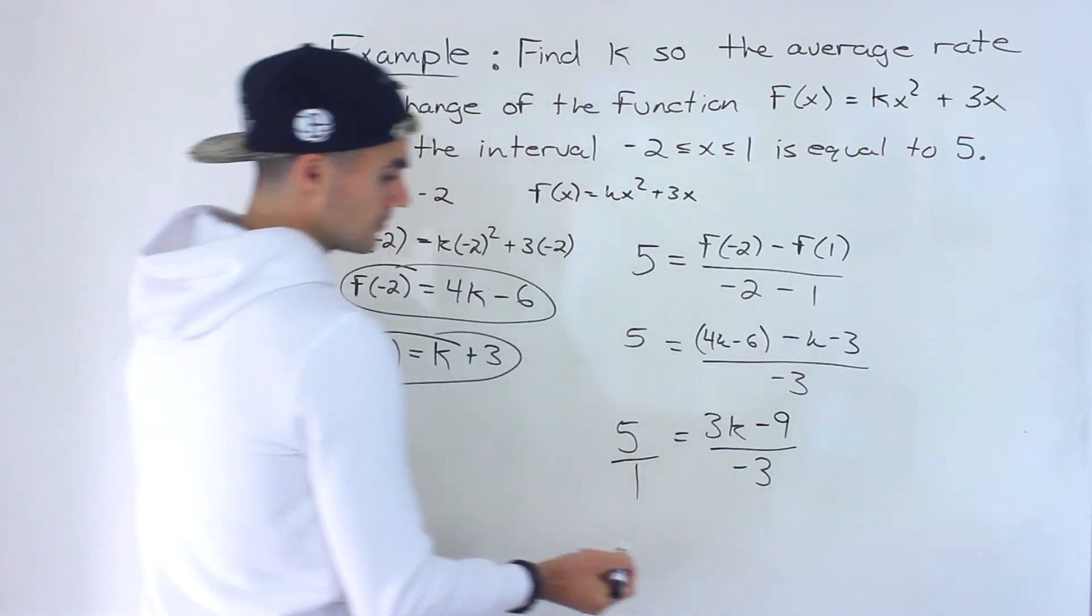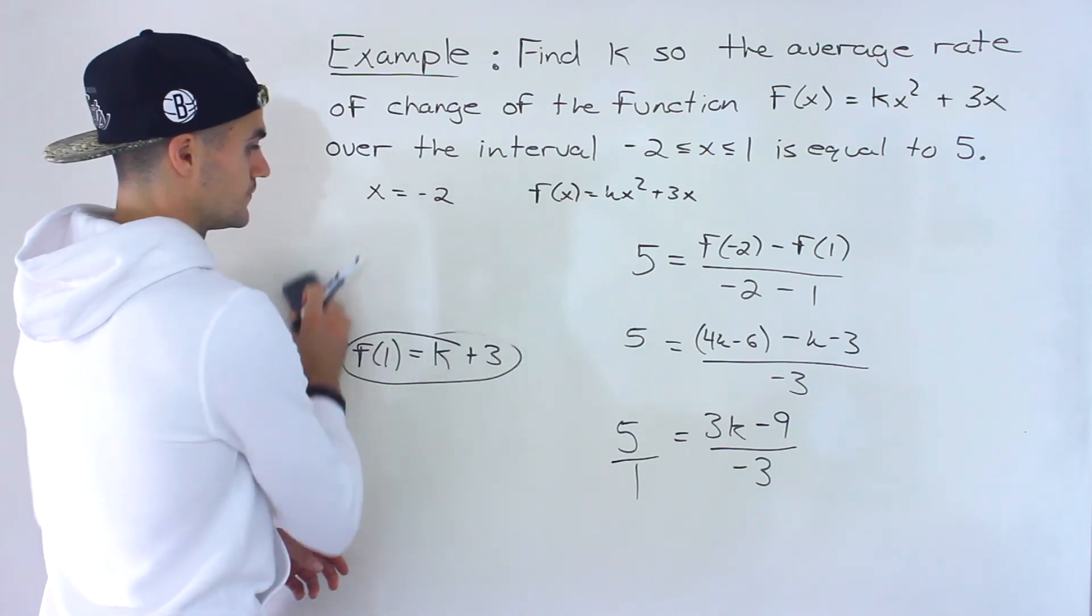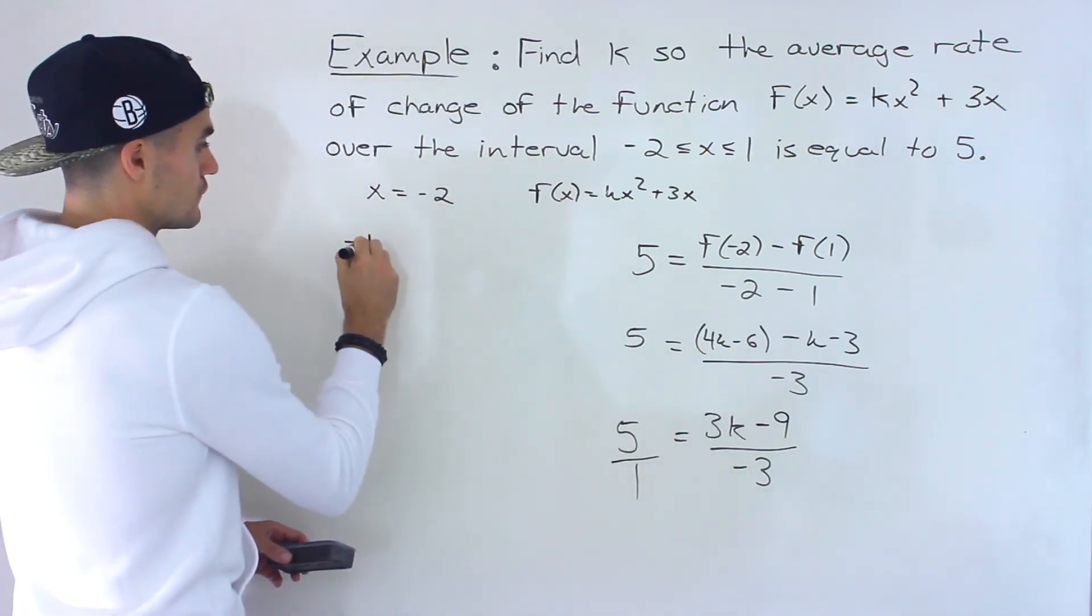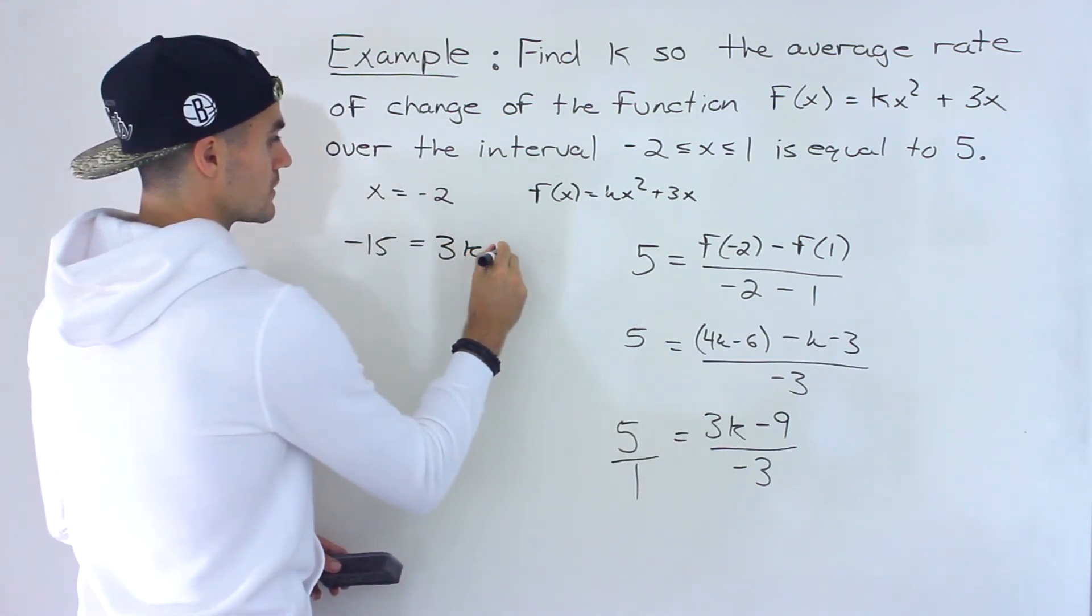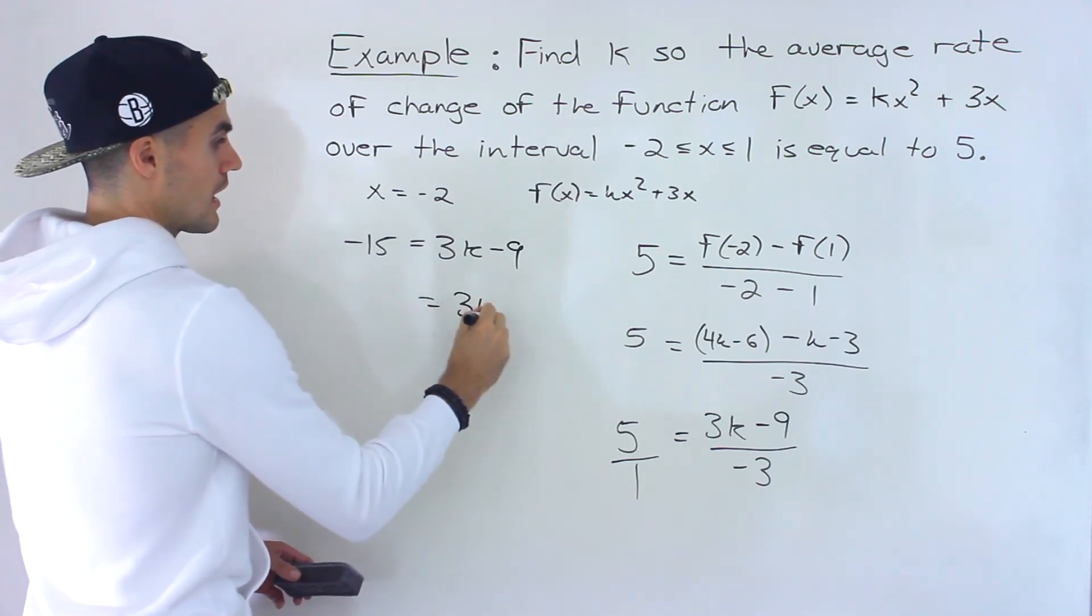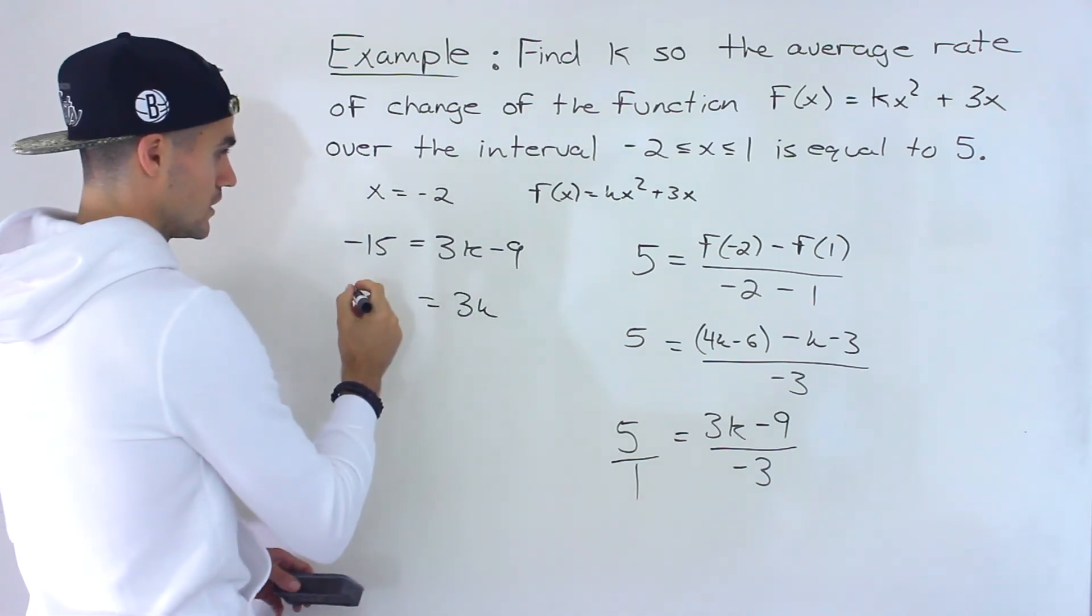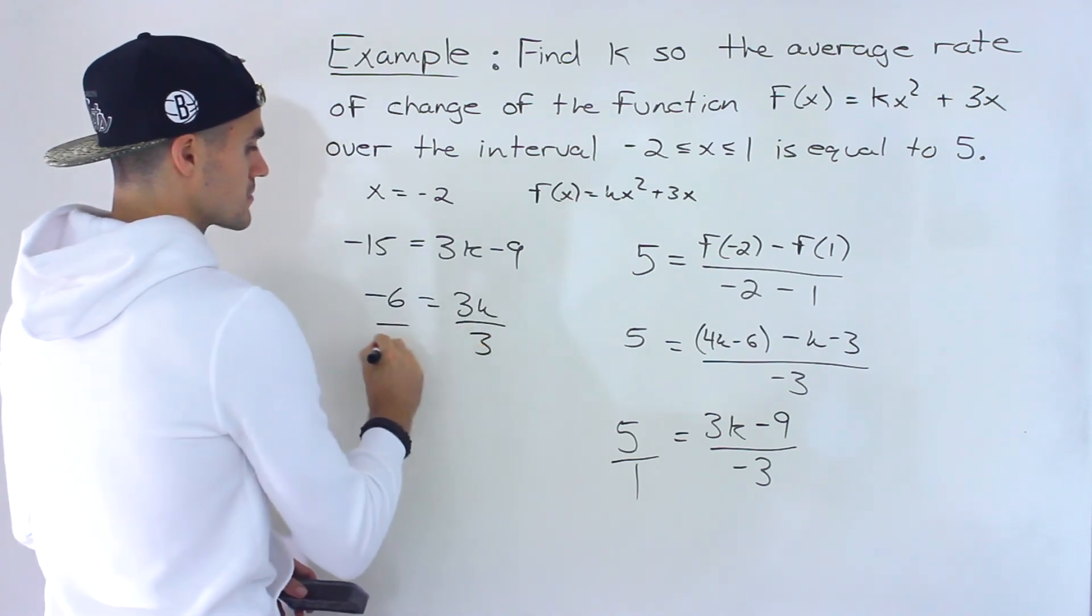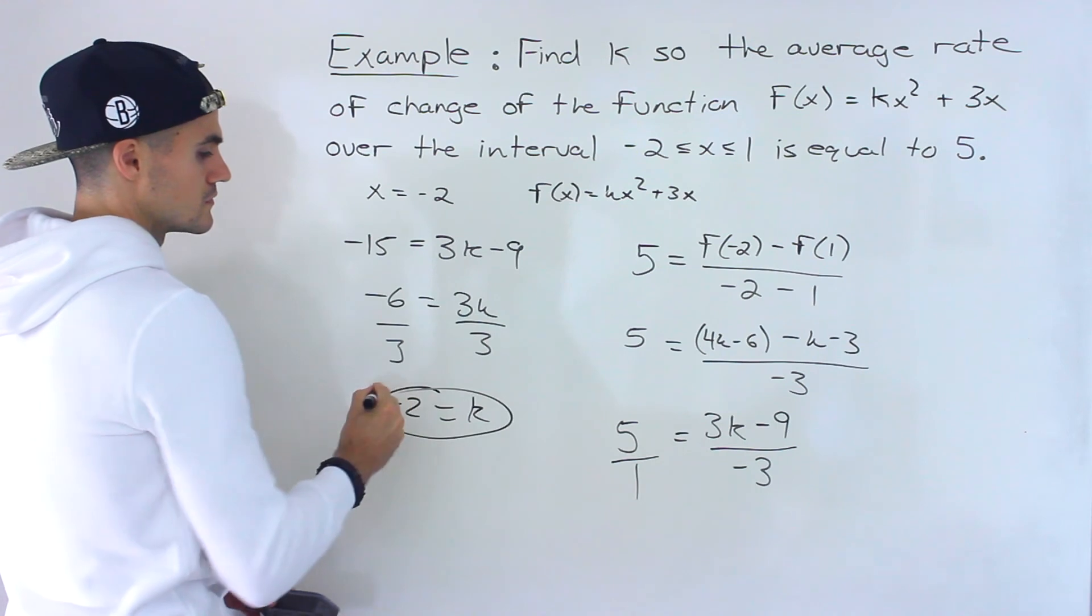From here, we can cross multiply, put the 5 over 1. So 5 times negative 3 would give us negative 15. And 1 times that expression would just be that expression. Then we'll have 3k. Bring the negative 9 over: negative 15 plus 9 would give us negative 6. Divide both sides by 3. So k would be negative 2.